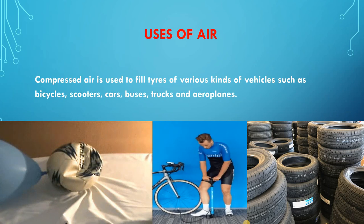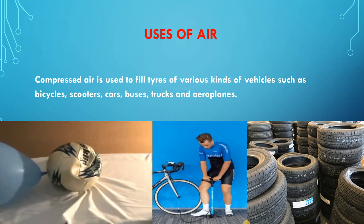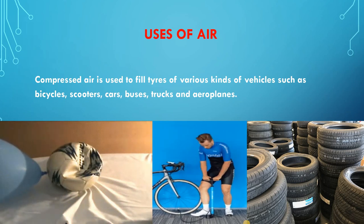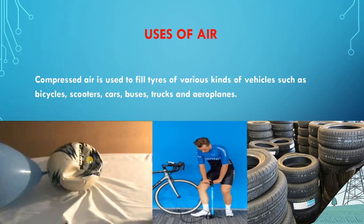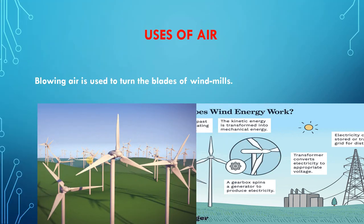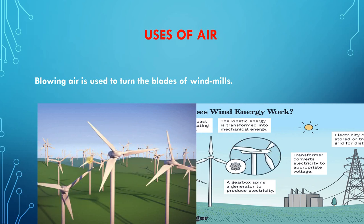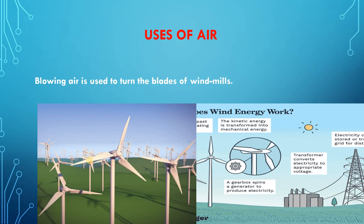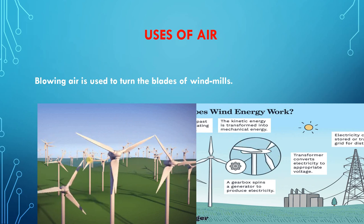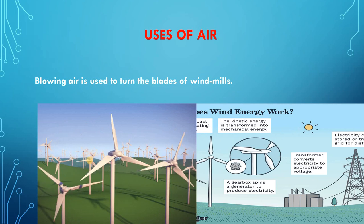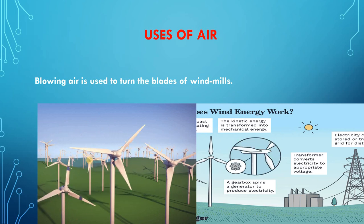Compressed air is used to fill the tires of various kinds of vehicles such as bicycles, scooters, cars, buses, trucks and aeroplanes. Air-filled tires make transport smooth and easier. Air is also used for inflating balloons and footballs. Blowing air — known as wind — is used to turn the blades of windmills. These windmills are then used to draw water by running pumps, to run flour mills, and to generate electricity. The windmill is also used to run a pump to draw water from the ground.